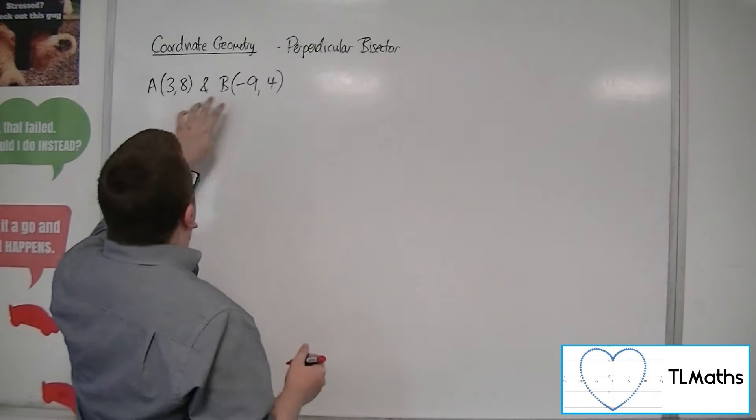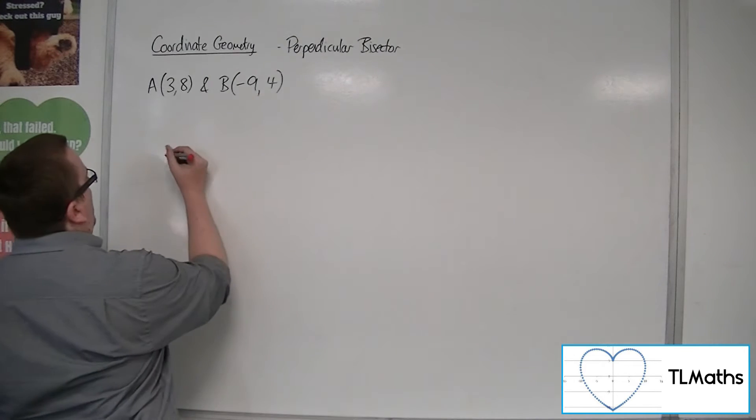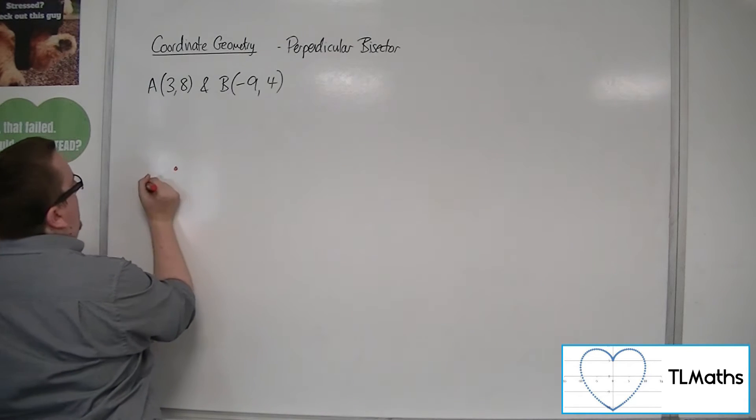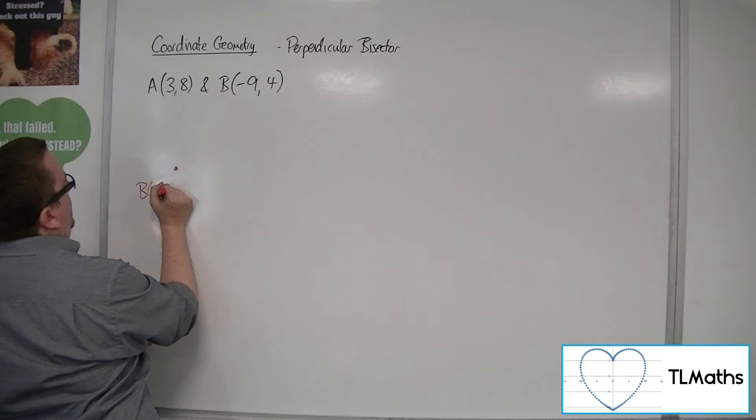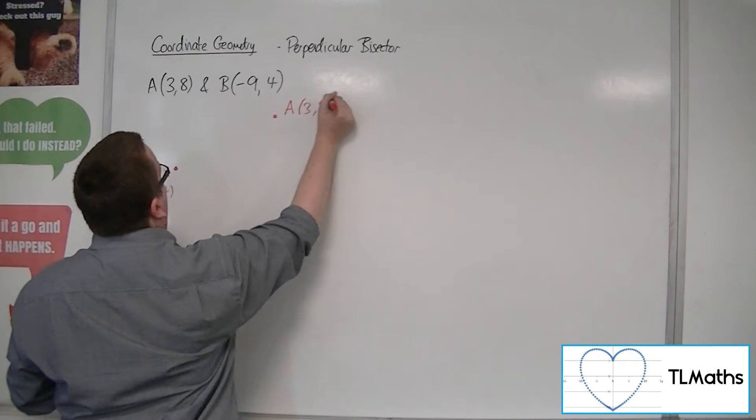So 3, 8 and minus 9, 4. So B is to the left and down of A. So here's B at minus 9, 4, and here's A at 3, 8.